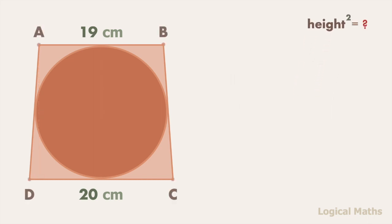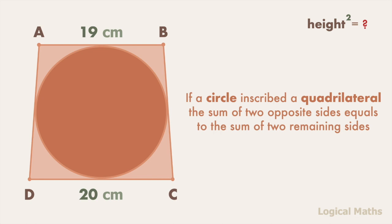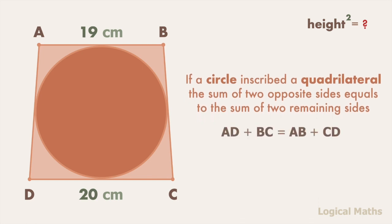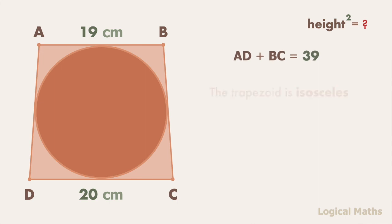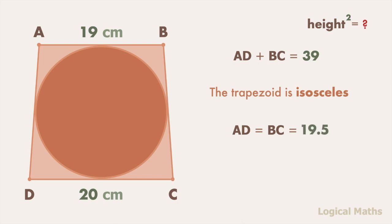Mark the vertices of the trapezoid as A, B, C, D. If a circle is inscribed in a quadrilateral, the sum of two opposite sides equals the sum of the two remaining sides. In our case, the sum of AD and BC equals the sum of AB and CD. Substituting the known values, AD plus BC equals 39. The trapezoid is isosceles, so AD equals BC, and each equals 39 over 2, or 19.5.